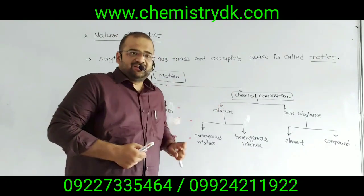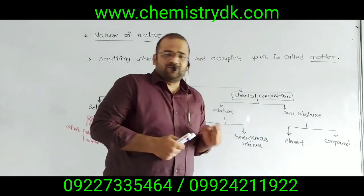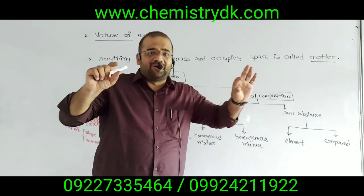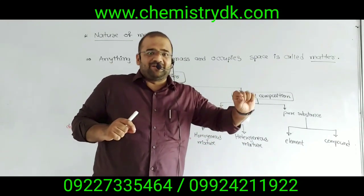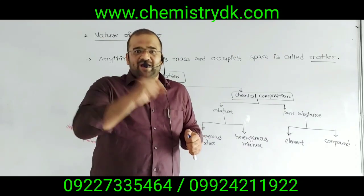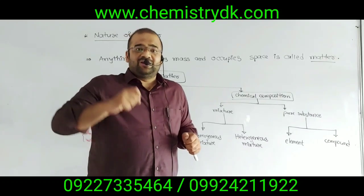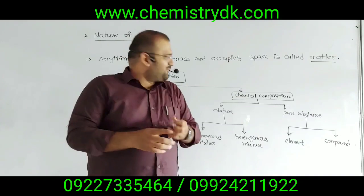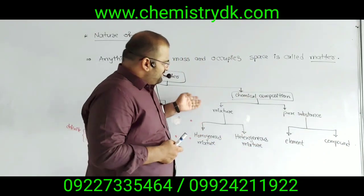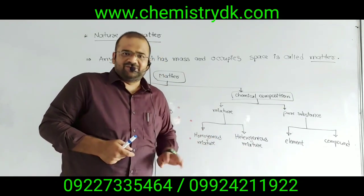By chemical composition, matter can be classified in two ways: one is mixture and another is pure substance. Pure substance means — like an iron rod — pure iron is made up of only Fe atoms. Similarly, a pure ice cube is made up of only H2O molecules, meaning there is only one kind of molecule. Pure substance is further classified into two types: element and compound. Mixture is also classified into two types: homogeneous mixture and heterogeneous mixture. Let us define all four categories.